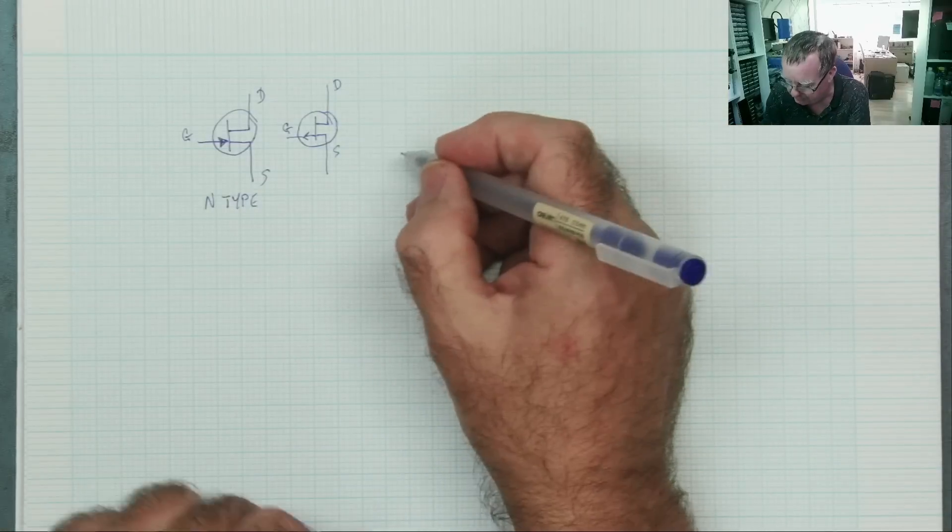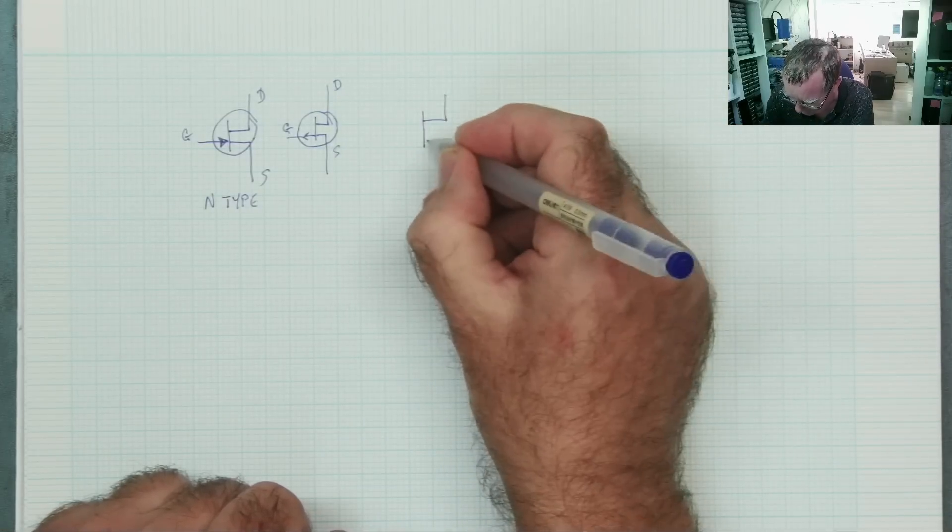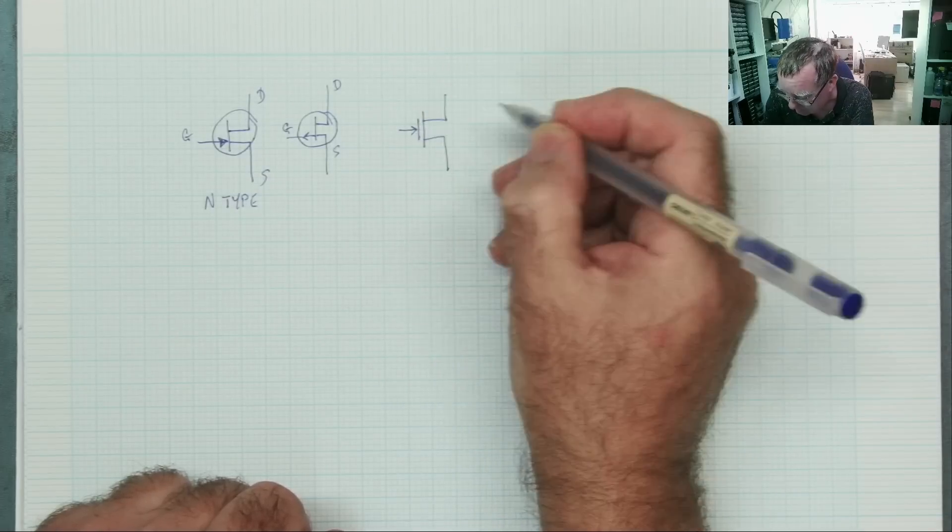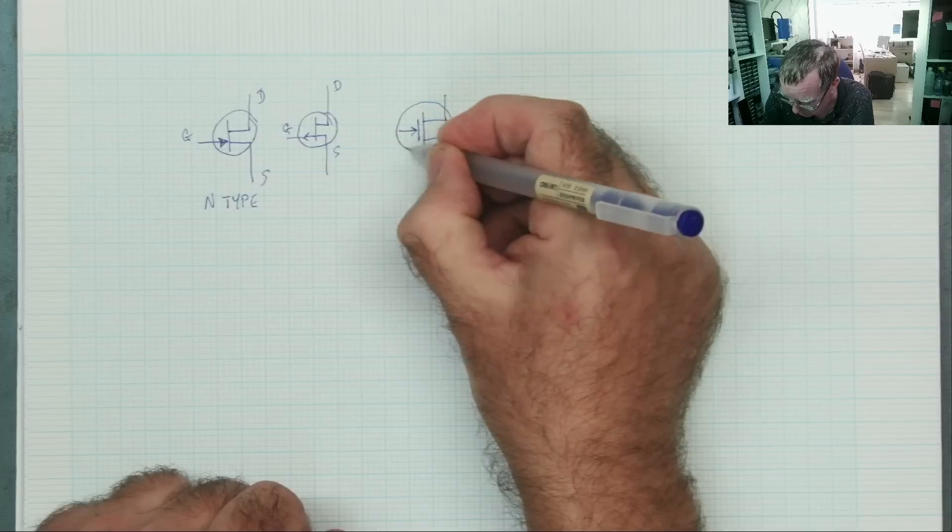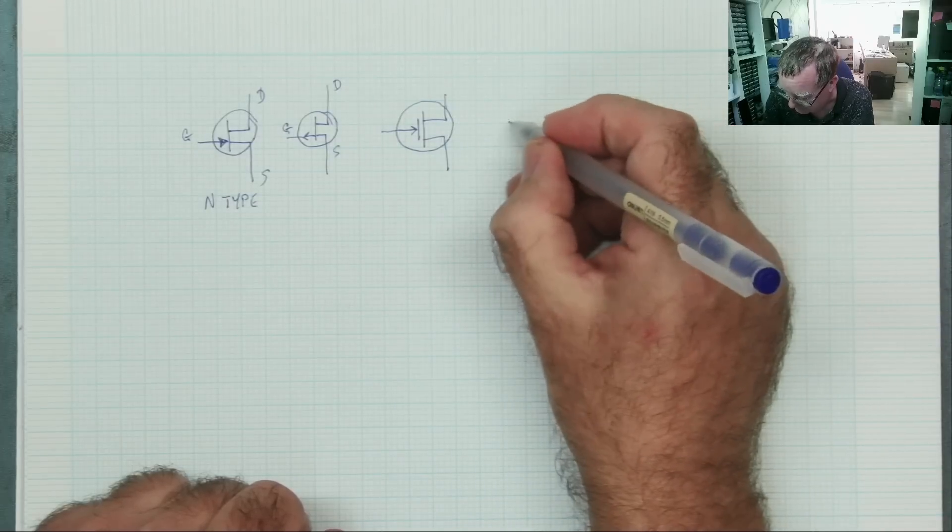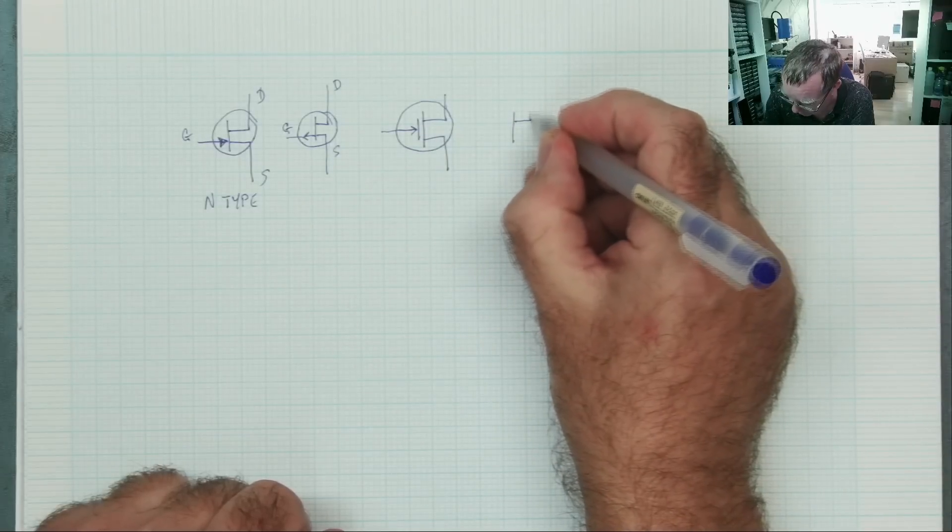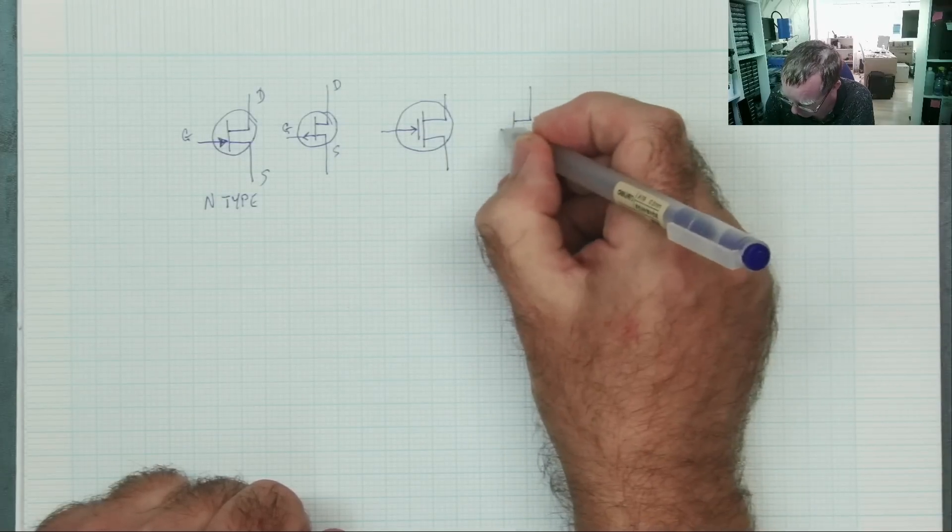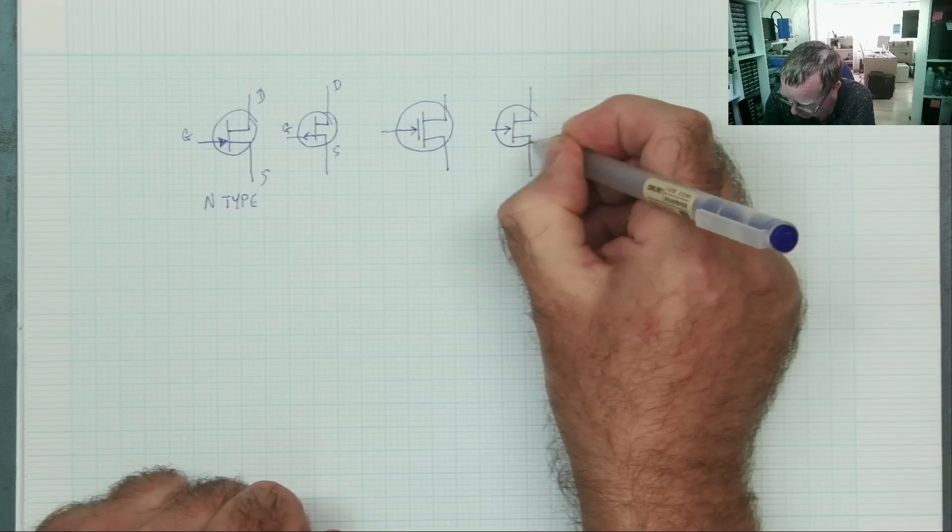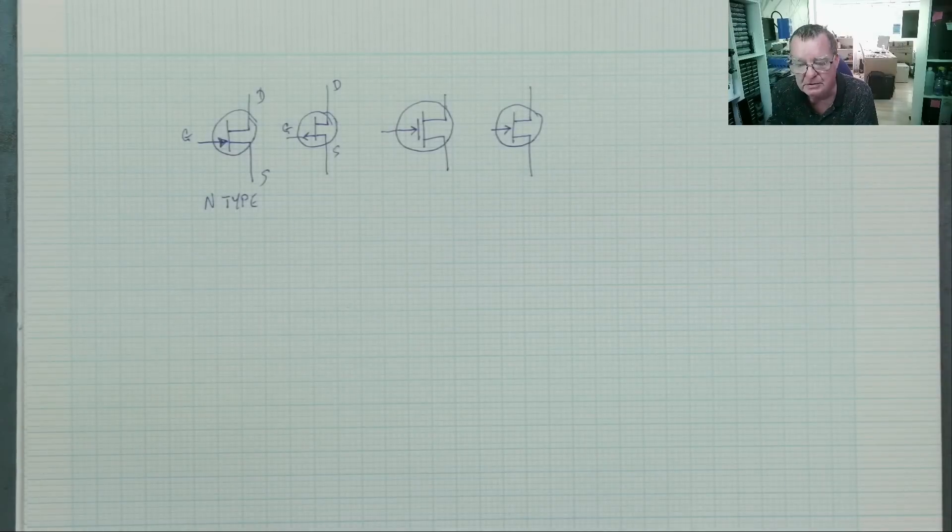There's a few variations on this symbol. So in both N-type and P-type, with the arrow pointing in different ways, you can have a symbol like this. You can also have a symbol, again, in both N- and P-type, like this. And there are a few extra variations besides.